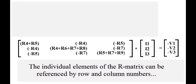The individual elements of the R matrix can be referenced by row and column numbers. This is the 1,1 element. This is the 1,2 element. This is the 1,3 element.